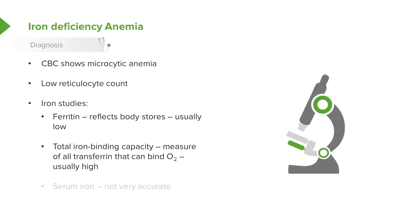Another iron study is the total iron binding capacity, or TIBC. This represents how many free transferrin sites there are. If there are a lot of free spaces for iron to bind, that means your iron is low — they should be bound but aren't. So in iron deficiency, TIBC is high. If a patient has inflammation with a normal ferritin but a high TIBC, they may still have iron deficiency with a falsely elevated ferritin due to something like pneumonia.